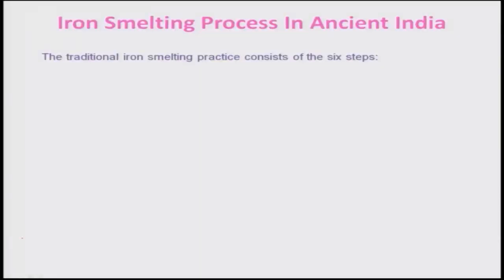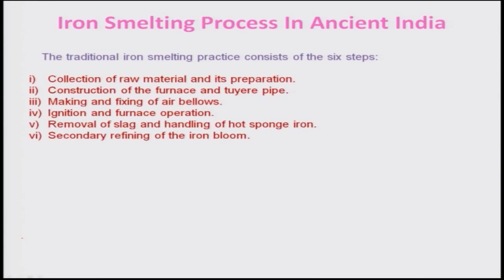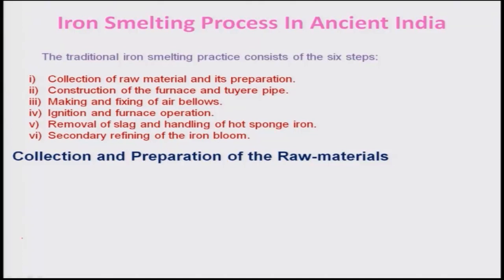The traditional iron smelting practice consists of six steps. First, one has to collect the raw materials and prepare them properly. Construction of furnace and tuyere pipe is also very important, and one has to make and fix air bellows properly, followed by ignition and furnace operation, removal of slag and handling of hot sponge iron. Secondary refining of iron bloom is also another part of the process.